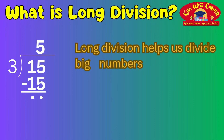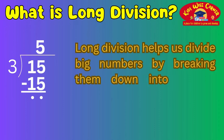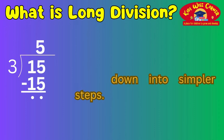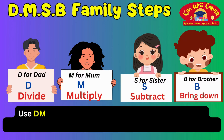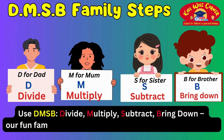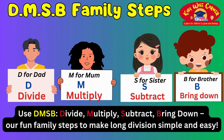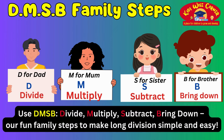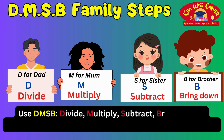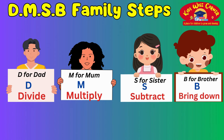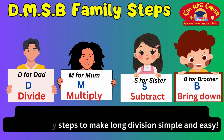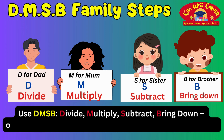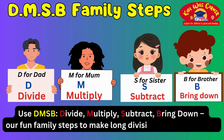So what is long division? Long division helps us divide big numbers by breaking them down into simpler steps. It might look tricky at first, but we'll make it easy to understand. We use the DMSB acronym, which stands for divide, multiply, subtract, and bring down. They are our fun family steps to make long division simple and easy.